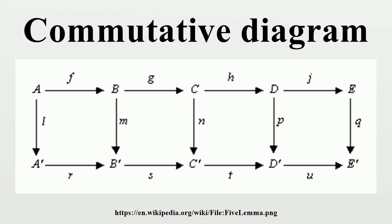In mathematics, and especially in category theory, a commutative diagram is a diagram of objects and morphisms such that all directed paths in the diagram with the same start and end points lead to the same result by composition.